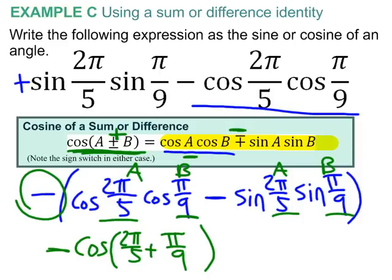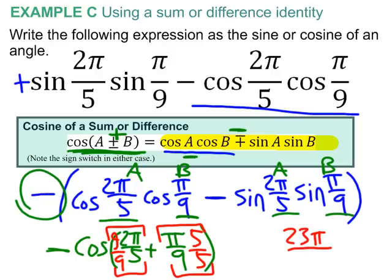the last thing I'm going to insist that you do is I do need you to combine those two fractions. Don't leave them there with uncommon denominators. Multiply this by 5 over 5. Multiply this by 9 over 9. And, fairly quickly, we'll say 9 times 2 pi is 18 pi plus another 5 pi. That's going to give me 23 pi. And, the denominator is 45. And, I've got a negative cosine here.